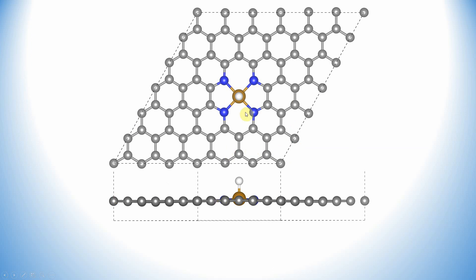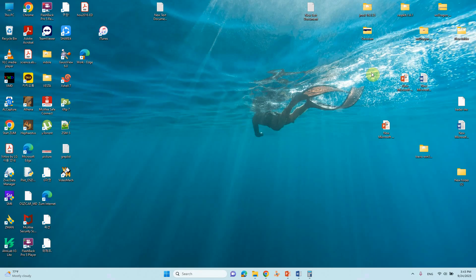This is the FeN4 system we used to calculate the Gibbs free energy for hydrogen evolution reactions. This is the top view and the side view of the model. Now I will tell you how to calculate the hydrogen adsorption energy, that means the Gibbs free energy.